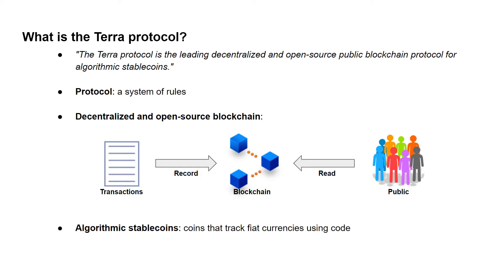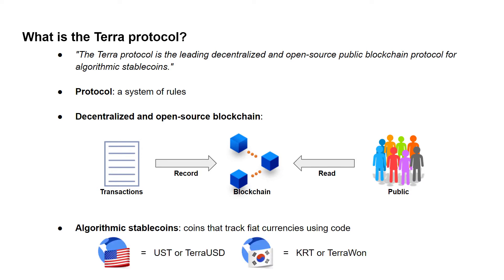The Terra network runs on a proof-of-stake blockchain similar to Ethereum 2.0, and it's powered by the Cosmos network, which is like an internet of blockchains. Terra serves to be a creator for algorithmic stablecoins — coins that try to maintain the same price as fiat currency like the US dollar or the British pound through a set of programmable rules. Some examples of Terra stablecoins are UST, KRT, and EUT. To sum it all up, the Terra Protocol is a system of rules that runs on a blockchain to enable the use of stablecoins in a programmable way.